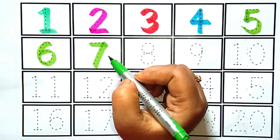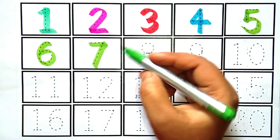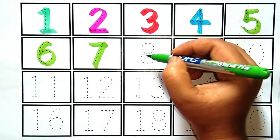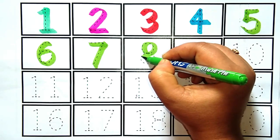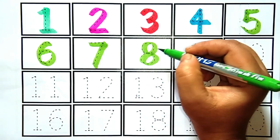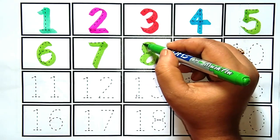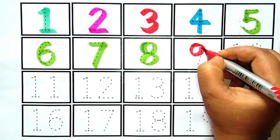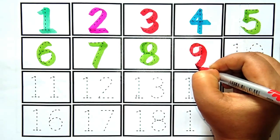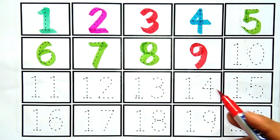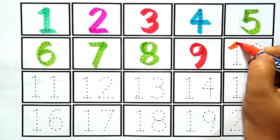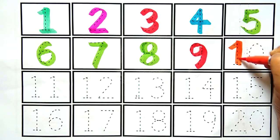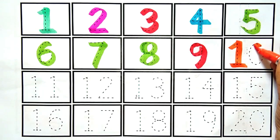7. Yeh hai number 7. Kia hai kids? Yeh hai number 7. 8, yeh hai number 8, yeh hai number 8. 9, yeh hai number 9, yeh hai number 9. 10, yeh hai number 10, yeh hai number 10.